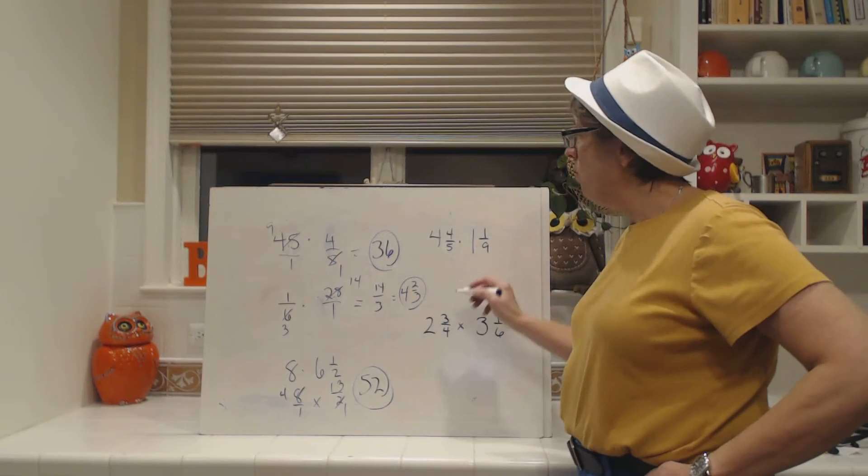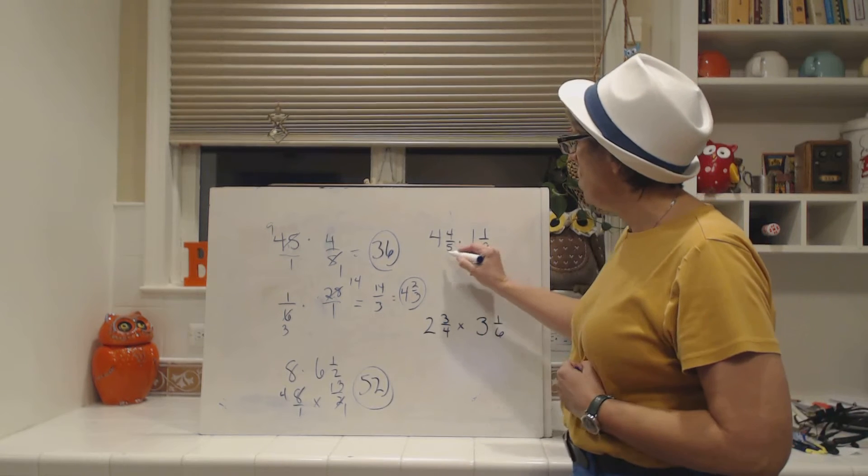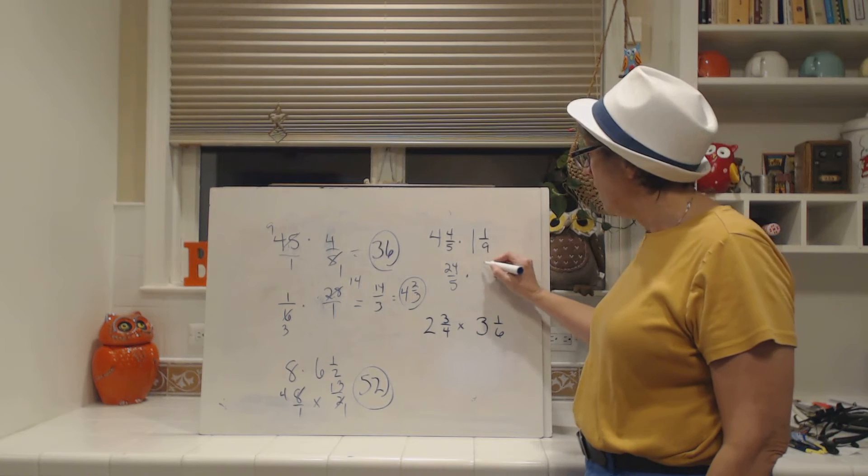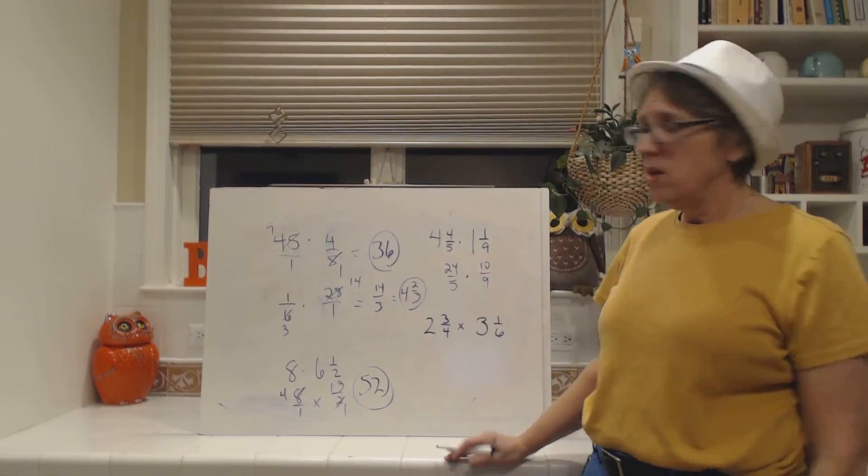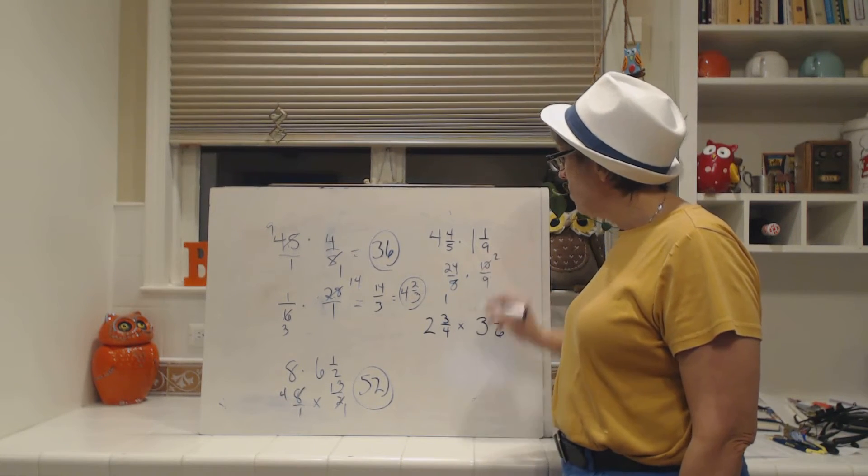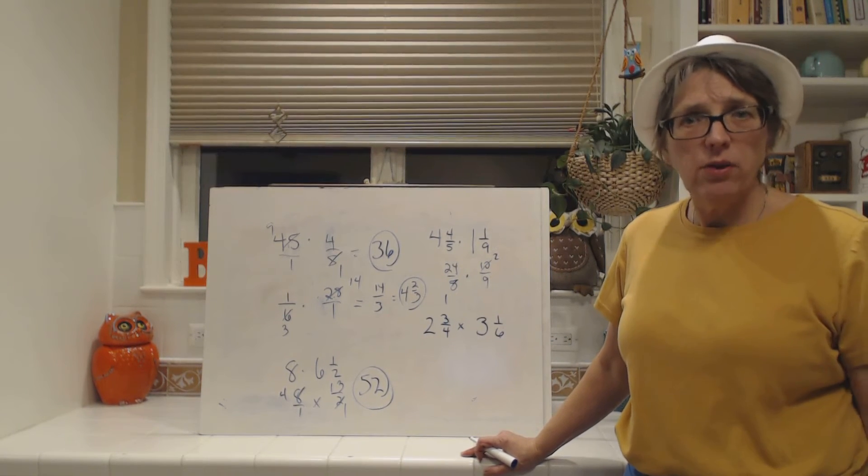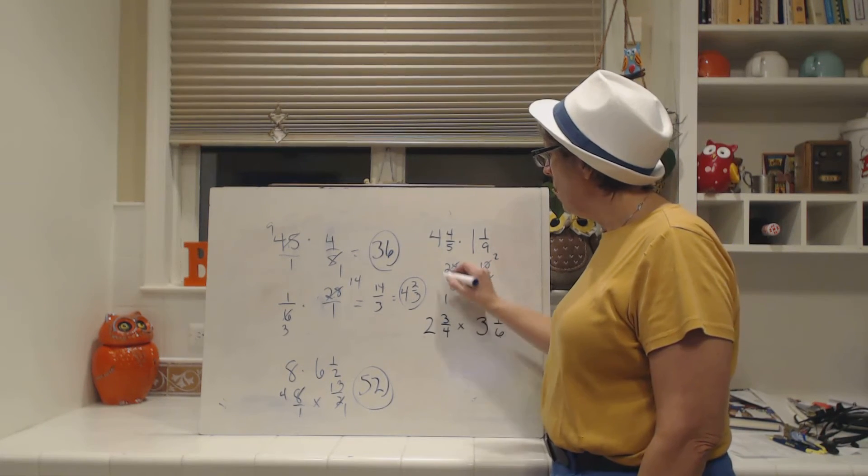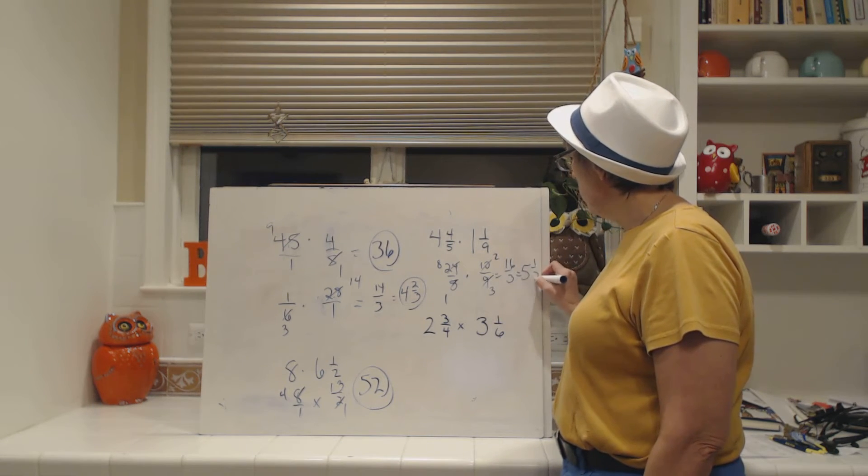Now this one, we're going to write 4 and 4/5. We change it to a what? That's right, an improper fraction first. So we get 24/5 times, 1 times 9 is 9, plus 1 is 10/9. Look, the 5 and the 10, the greatest common factor is 5. So we're going to divide both. 5 divided by 5 is 1, and 10 divided by 5 is 2. What goes into 24 and 9? That's right, 3. 3 is the greatest common factor. So 9 divided by 3 is 3, and 24 divided by 3 is 8. We get 8 times 2 is 16/3, which is 5 and 1/3.